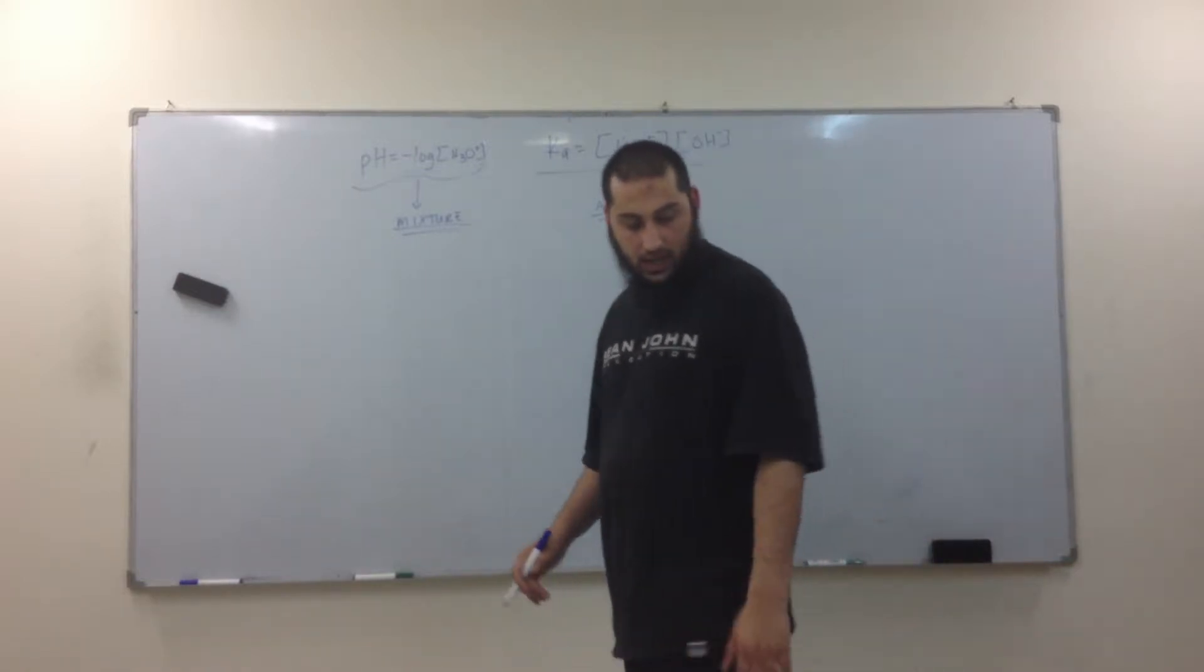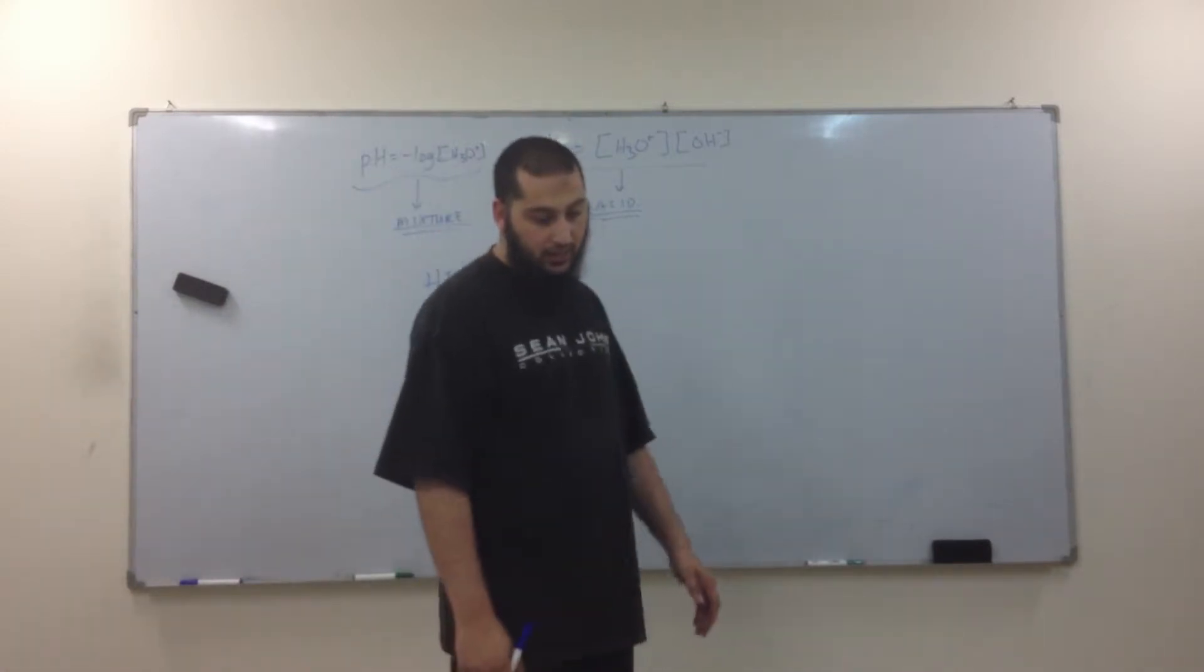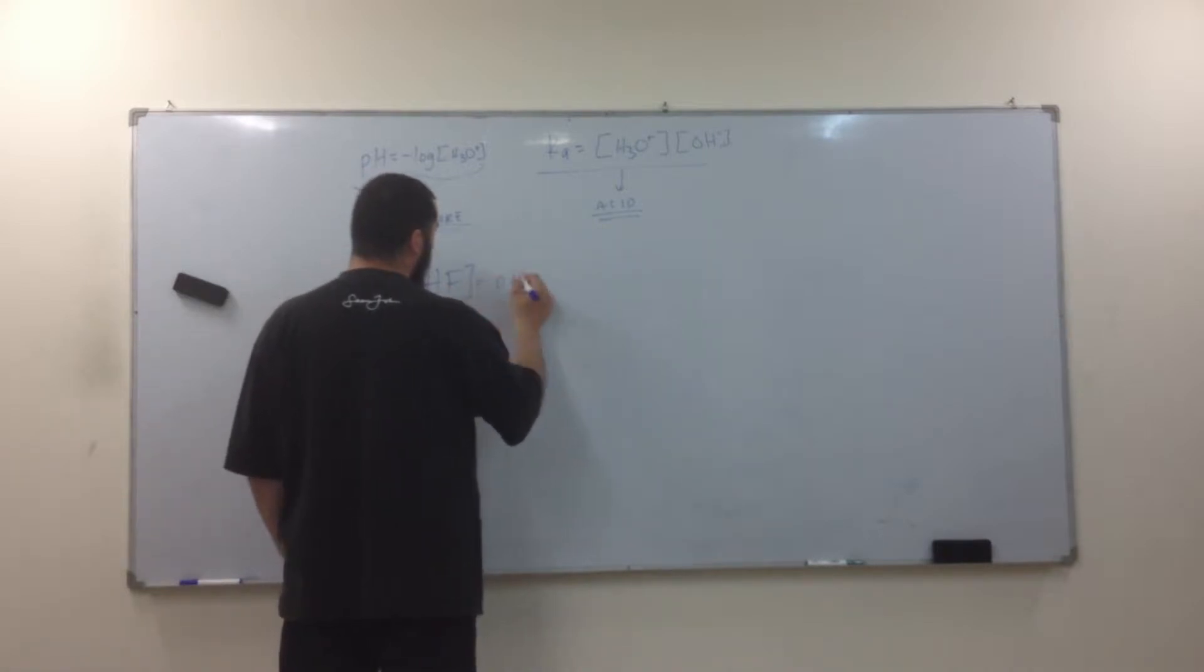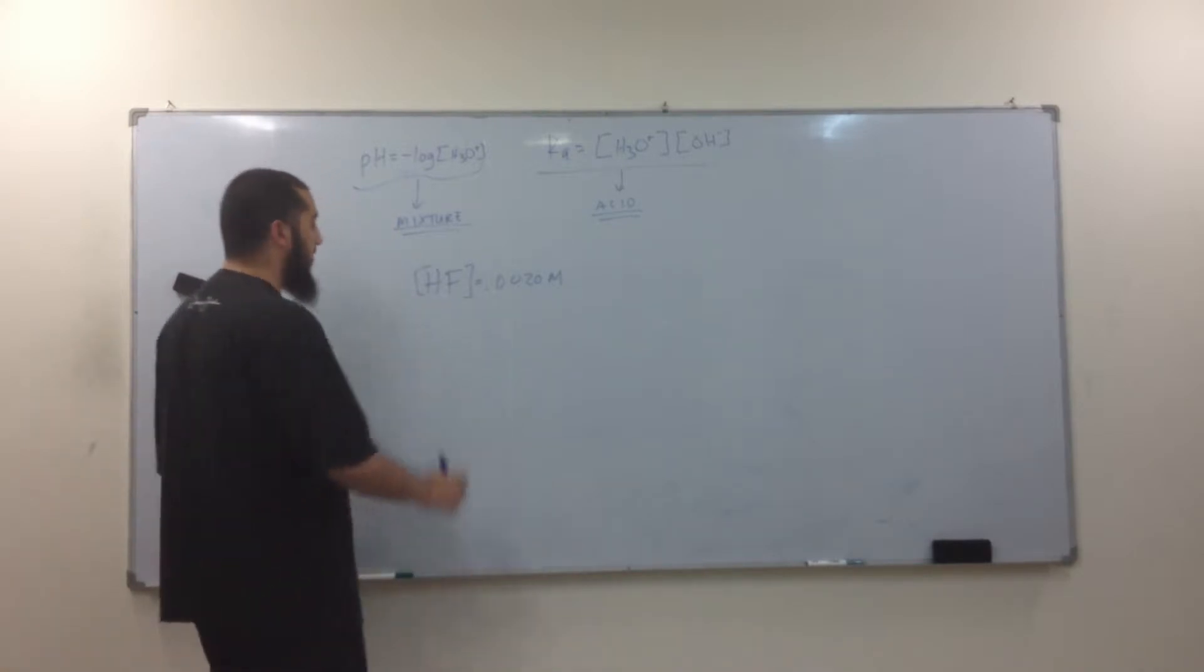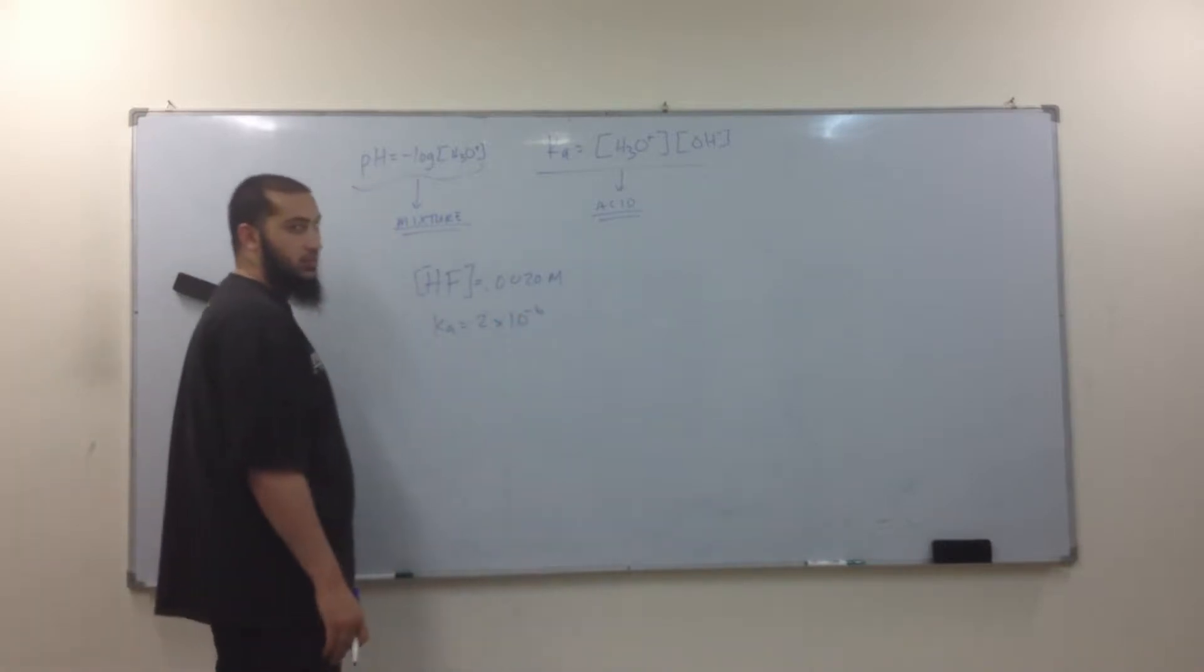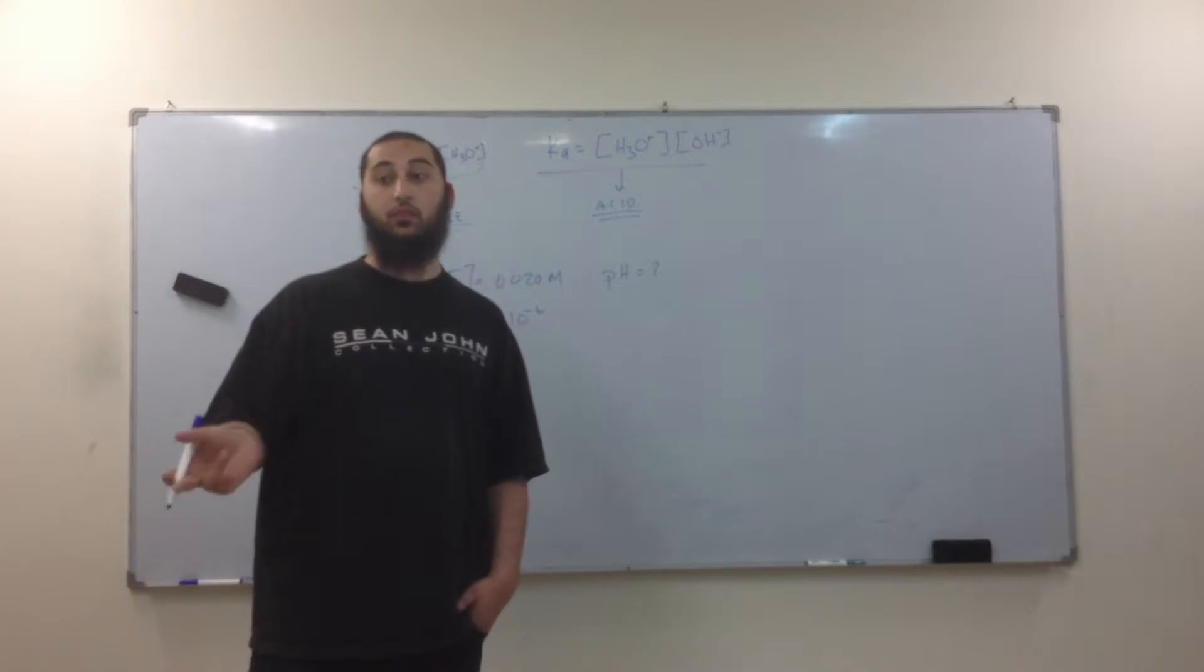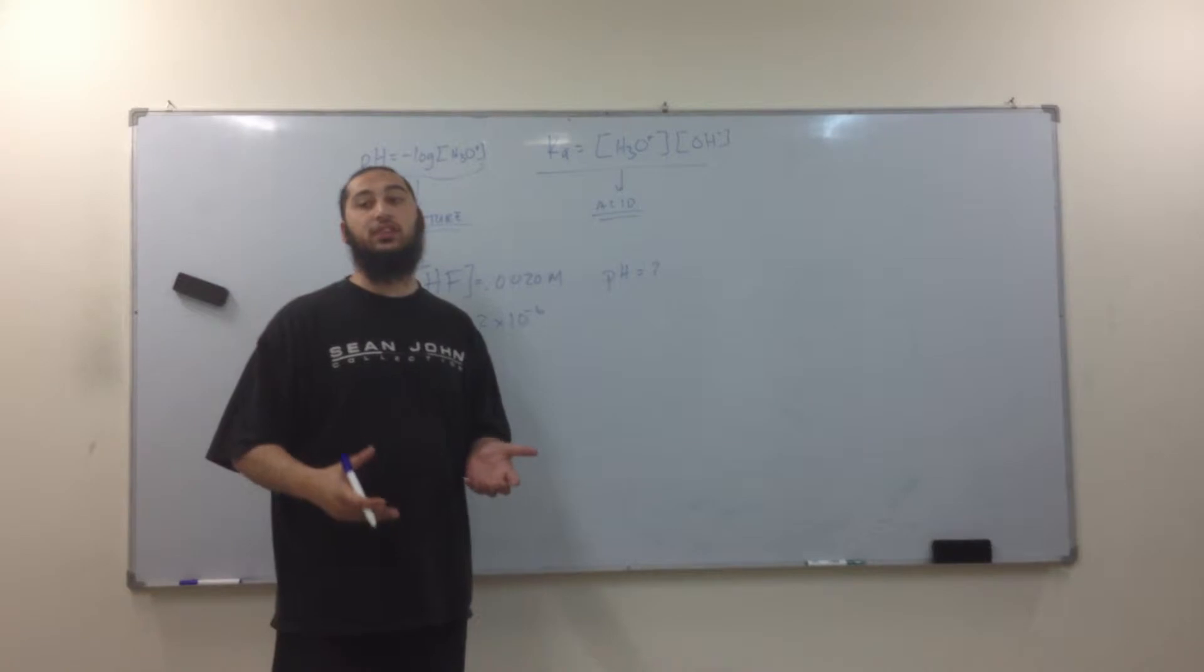So for example, we have hydrofluoric acid. Hydrofluoric acid has a concentration of 0.0020 molarity. Now, what's the Ka of hydrofluoric acid? 2 times 10 to the negative 6. Now, what the question is asking is what is the pH? pH belongs to what? The mixture or the acid? The mixture. So I need to find out how much H3O plus was in the mixture.